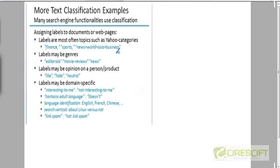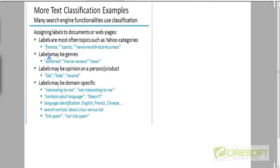Here are some more examples of classification. You can classify news articles into different classes such as finance, sports, and business. You can also classify articles as editorial articles, movie reviews, news, and so on.